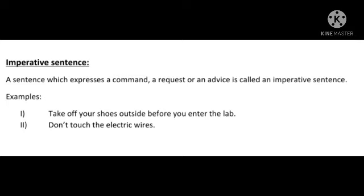What is an imperative sentence? A sentence which expresses a command, a request, or an advice is called an imperative sentence. For example: 'Take off your shoes outside before you enter the lab.' 'Don't touch the electric wires.' 'Come here.' 'Go there.' All these examples are of imperative sentences.